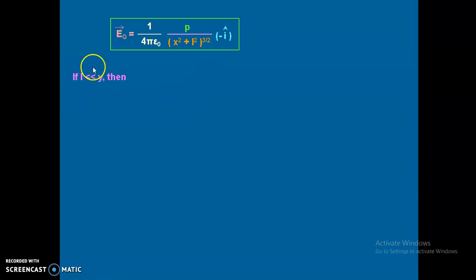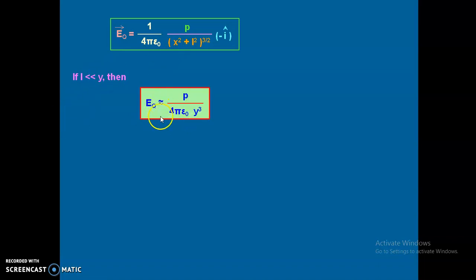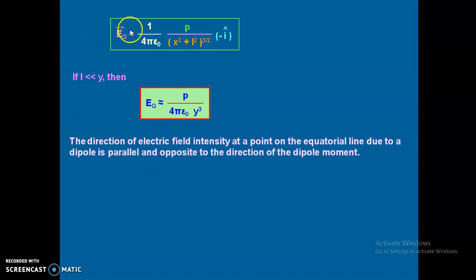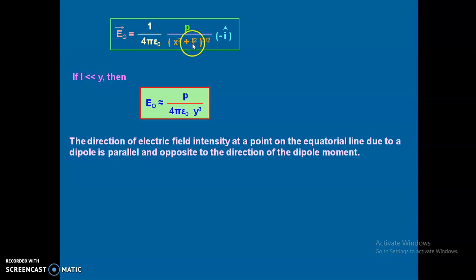If l is much less than x, then E_q equals 1 over 4πε₀ times p over x³. You can see why this is so — we have discussed in earlier videos that if l is much less than x, then l² is neglected, and x² cancels with the (3/2) power, leaving only x³ in the denominator.